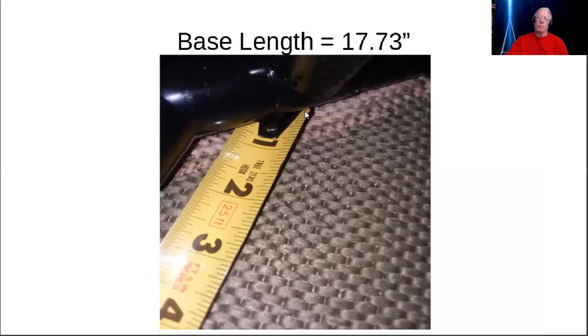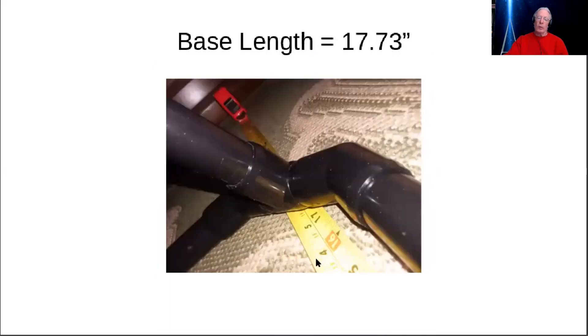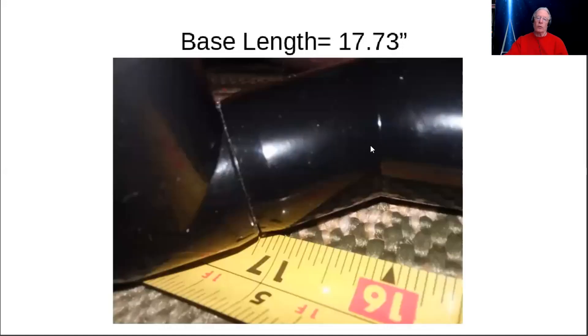Here we have the first end of the tape measure. You can see the pipe is coming down here at an angle. I try to match the zero point up, the tip of the tape measure, with that point where it would theoretically hit the floor. That's the way I do the first end. Similarly, on the second end, you want the top of the tape measure to be parallel to the point where it would theoretically intersect on the floor at that angle.